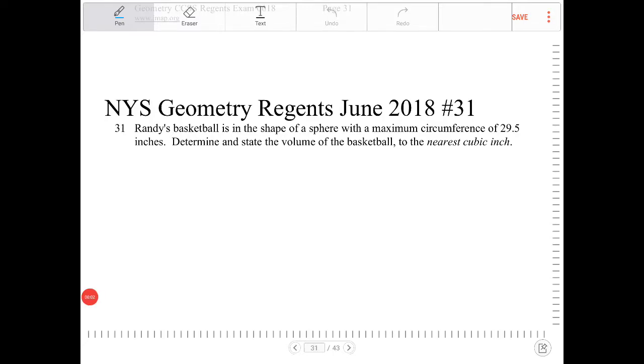Randy's basketball is in the shape of a sphere with a maximum circumference of 29.5 inches. Determine and state the volume of the basketball to the nearest cubic inch.